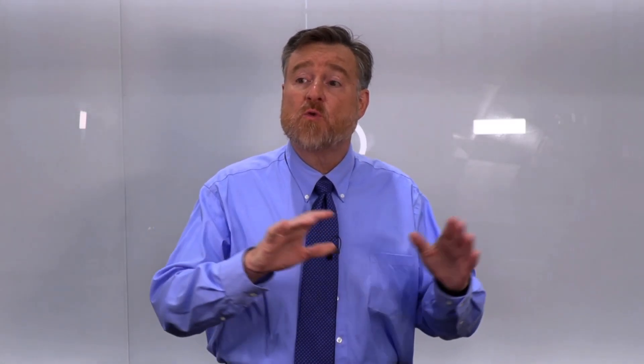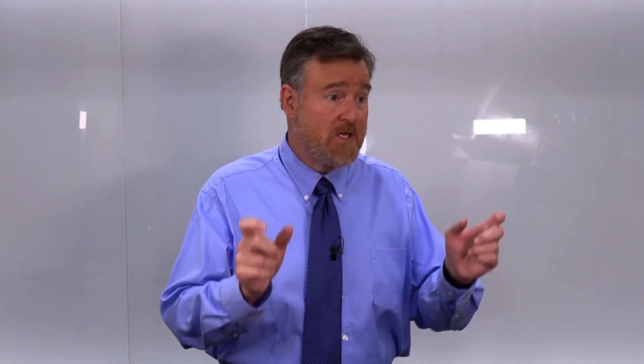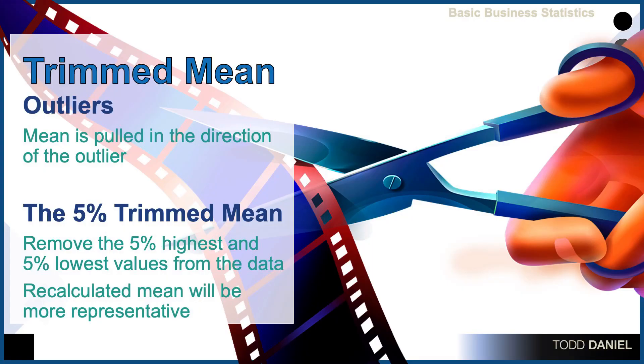What we might choose to do is to trim off a portion of that distribution from the upper and lower ends, which would effectively remove the outliers, giving us the average of the range within that distribution.